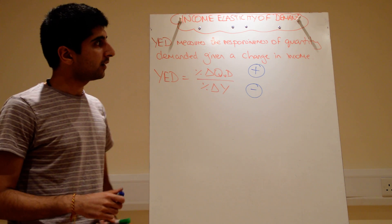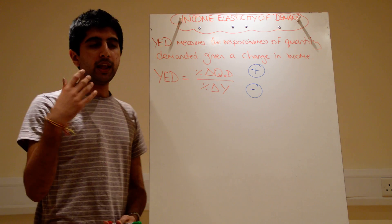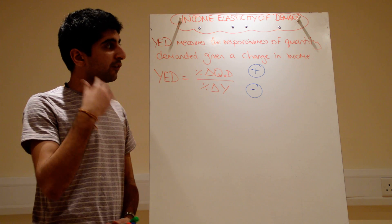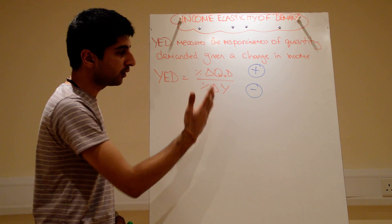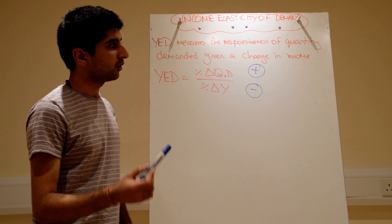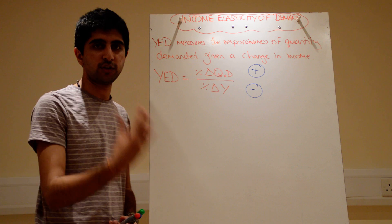Now we're just looking at the responsiveness of quantity demanded when income changes. We know when income increases, for a normal good, that will shift demand to the right. For an inferior good, demand will shift to the left. Now we want to know, well how much will demand shift? How much will quantity demanded change in terms of the shift?